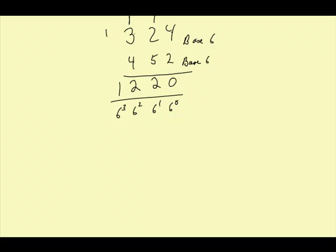Now, 6 to the 0 is 1, and there are 0 ones, so we have a 0. 6 to the 1 is a 6, and we have 2 of them, so that gives us 12.